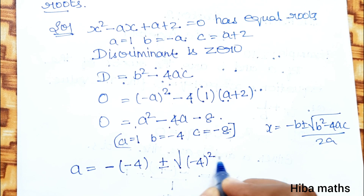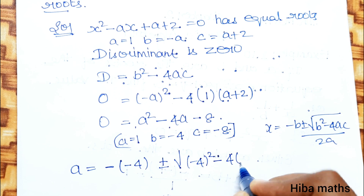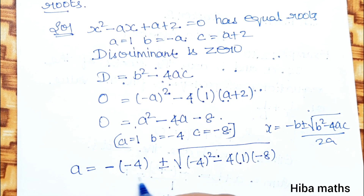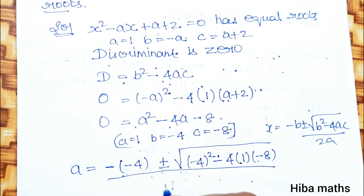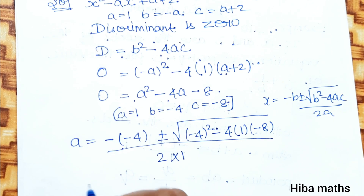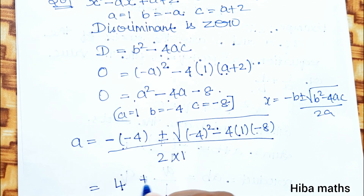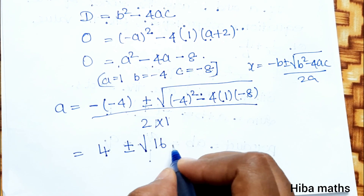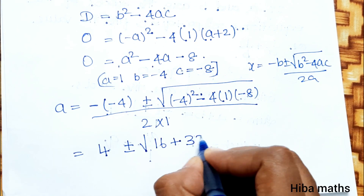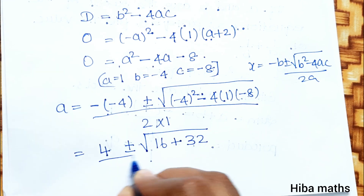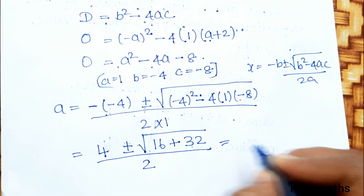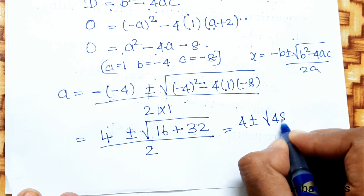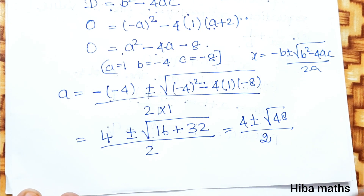Substituting values: x equals minus of minus 4 plus or minus root of minus 4 whole squared minus 4 times 1 times minus 8, divided by 2 times 1. That gives 4 plus or minus root of 16 plus 32, divided by 2, which equals 4 plus or minus root of 48, divided by 2.